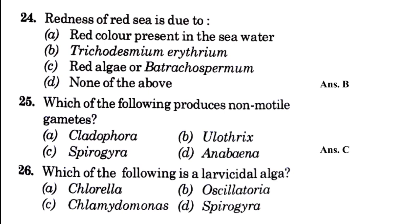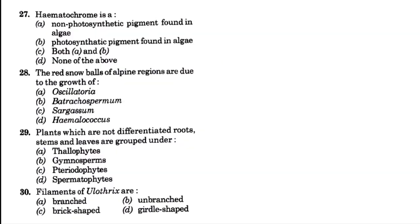Which of the following is a larvicidal alga? Chlorella, Oscillatoria, Chlamydomonas, or Spirogyra. The answer is option C, that is Chlamydomonas. Then, haematochrome is a — blank: non-photosynthetic pigment found in algae, photosynthetic pigment found in algae, both A and B, or none of the above. The answer is option A — a non-photosynthetic pigment found in algae. The red snowballs of alpine regions are due to the growth of — blank: Oscillatoria, Batrachospermum, Sargassum, or Haematococcus. The answer is D, that is Haematococcus.